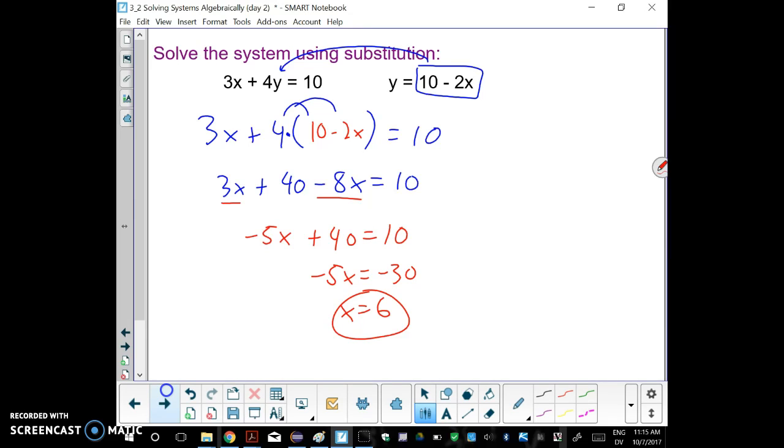We're not quite done yet because we still have to find y. So plug in the 6 up here for x. So we have y equals 10 minus 2 times 6. So y would be 10 minus 12, which is negative 2. And that's our xy solution to the system: (6, -2).